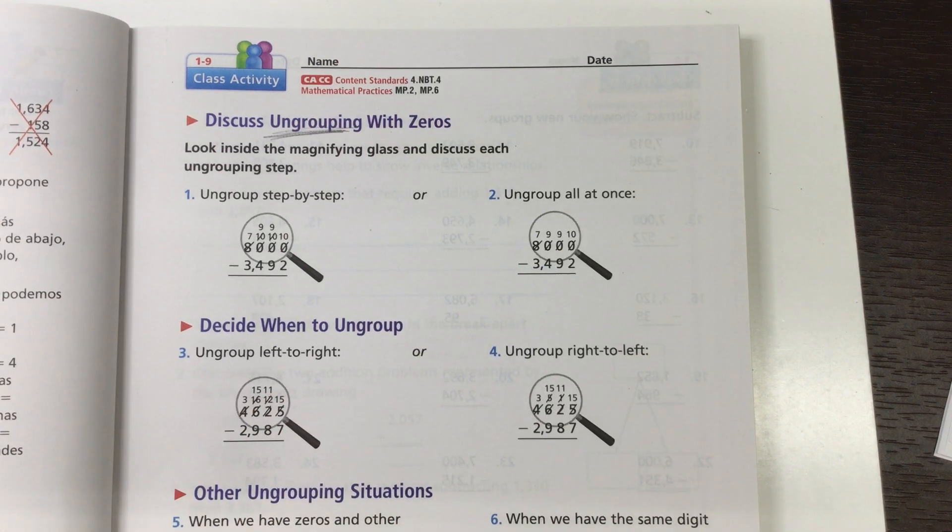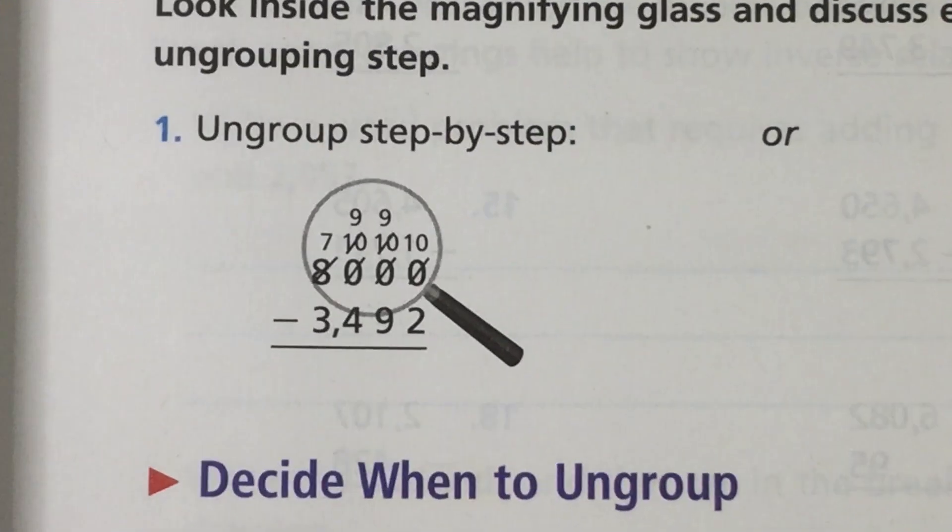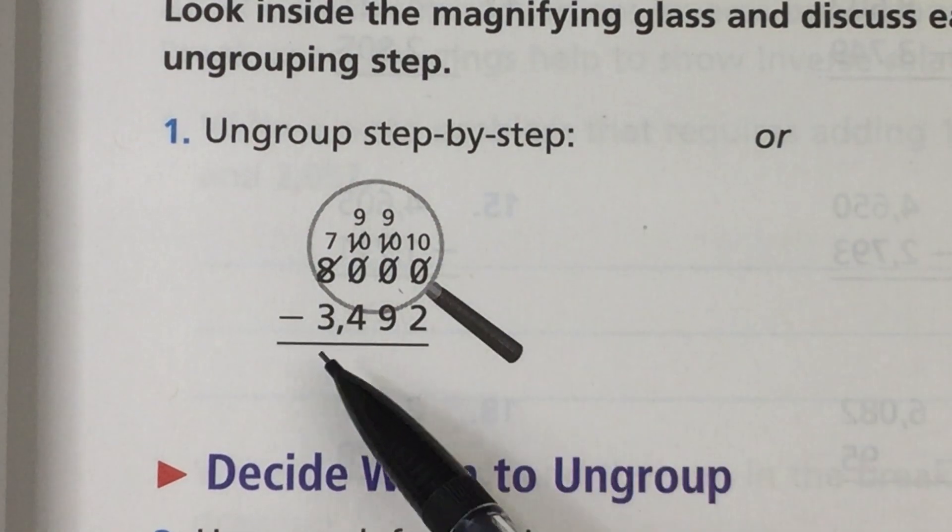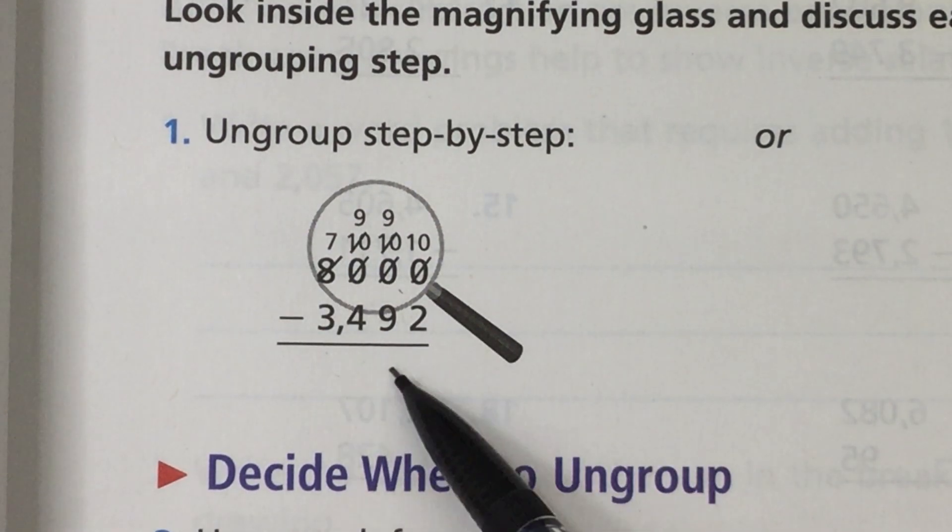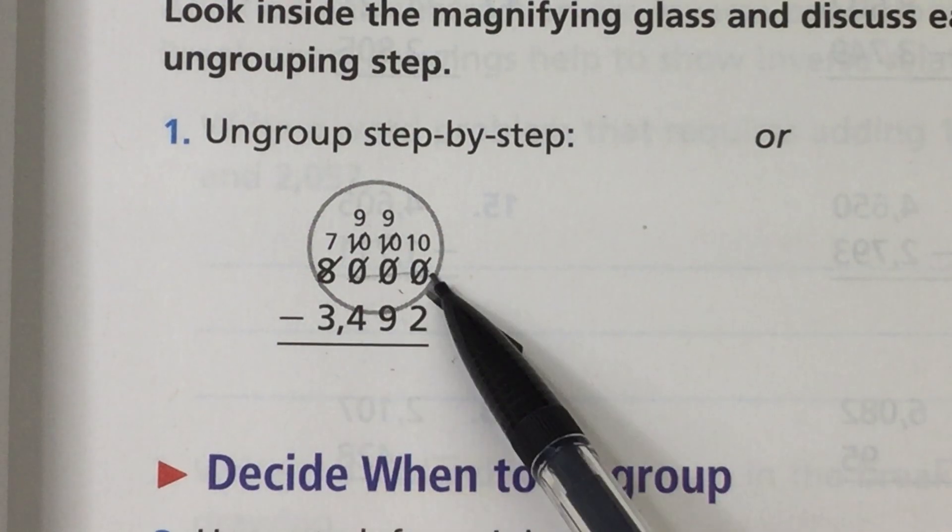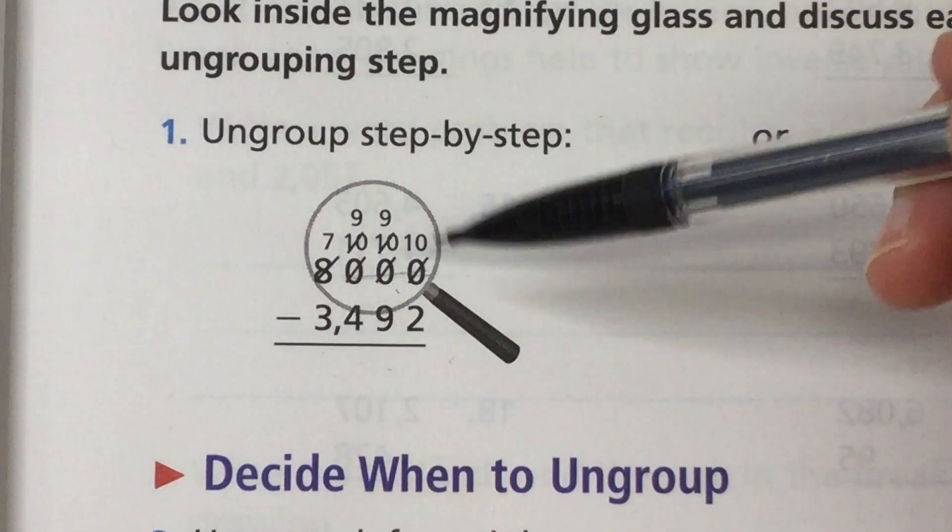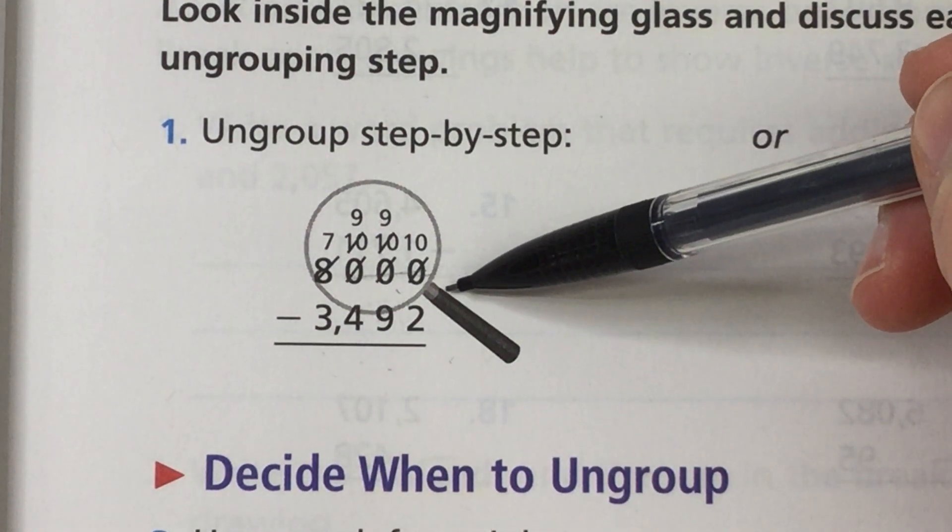Okay so ungrouping step by step. Let's zoom in on this zoomed-in number here. They've taken 8,000 and they're subtracting 3,492 from it. So all of these zeros up here they're showing us, they're reminding us what we do with them. This is something you learned in second grade and you reviewed again in third grade.